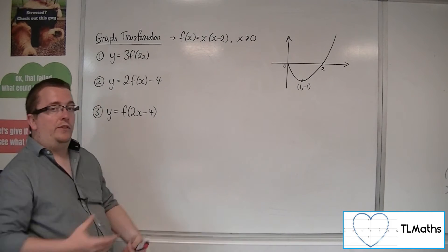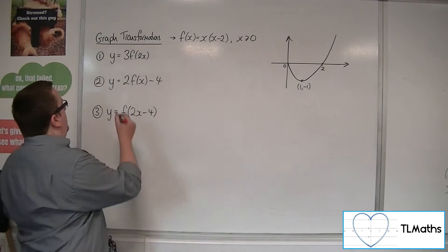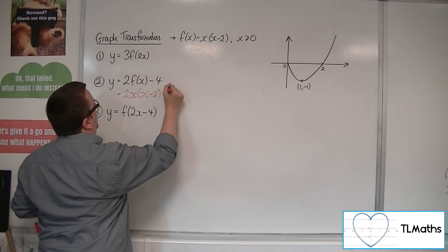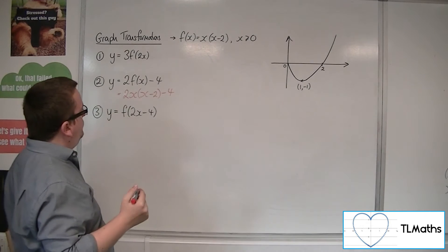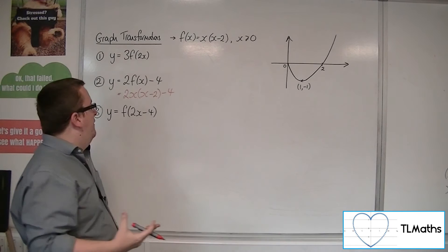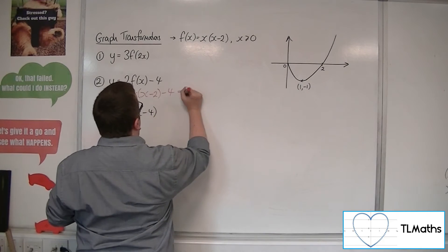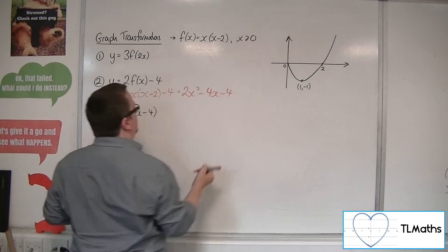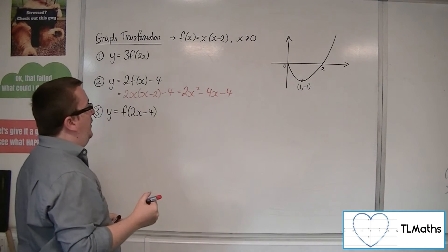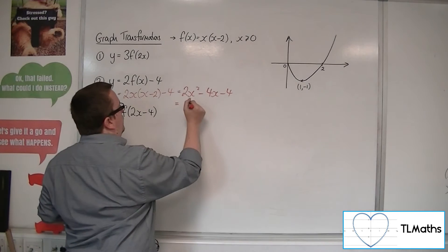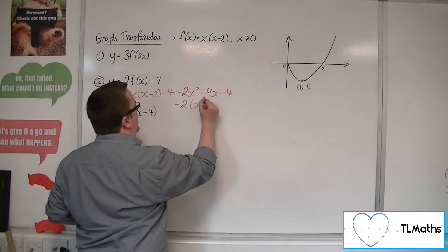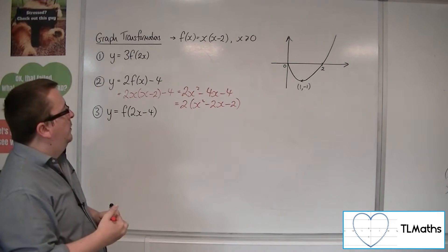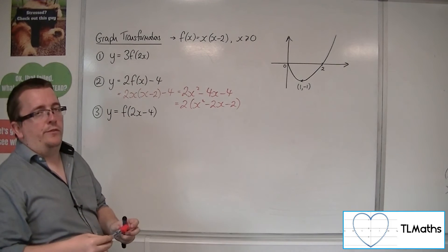Let's have a look at the second one. Y is equal to 2 lots of f of x take away 4. So we've got 2 lots of x times x minus 2, take away 4. So what we have here is if I expand that out, 2x squared take away 4x take away 4. If we could factor that out, we get 2 times x squared minus 2x minus 2, and that's really as far as I can go with factorized form.